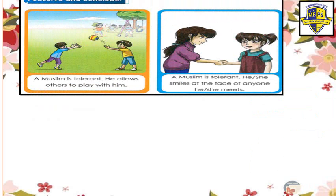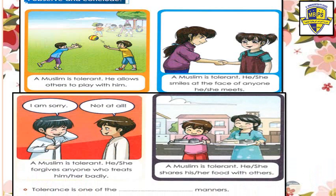A Muslim is tolerant — he allows others to play with him. A Muslim is tolerant — he or she smiles at the face of anyone he or she meets. A Muslim is tolerant — he or she forgives anyone who treats him or her badly. A Muslim is tolerant — he or she shares his or her food with others. So tolerance is one of the noble manners and good Muslim manners.